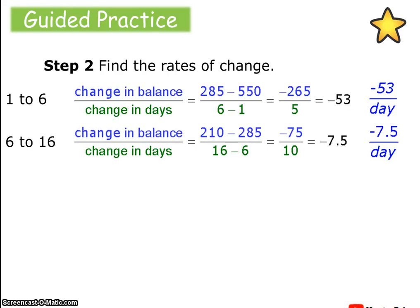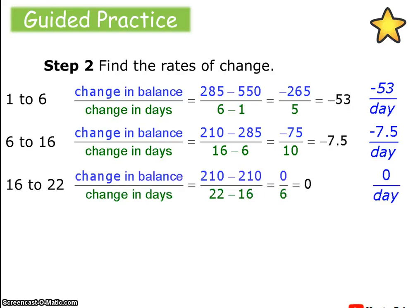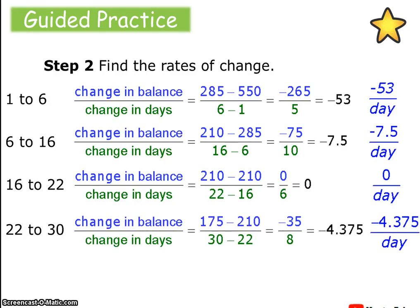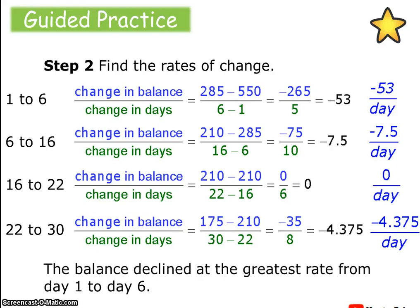From day six to sixteen — a change of ten days — the balance went from 285 to 210, further decreasing: negative 75 over 10 is negative $7.50 per day. From day 16 to 22, there was no change — it stayed at 210 over six days. From day 22 to 30, over eight days the balance changed by negative $35, which is negative $4.375 per day. So the balance declined at the greatest rate from day one to day six — $53 per day — then slowed down, stopped changing for a while, and then declined a bit more.